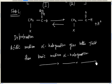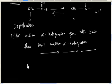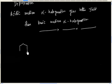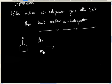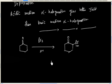So if I ask what will be the product in this reaction — this is simply alpha-halogenation. Bromine will be attached at the alpha position. So this is about acidic medium alpha-halogenation.